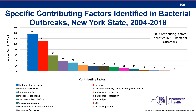Looking at specific contributing factors in bacterial outbreaks from 2004 to 2018, there are several different factors because bacterial outbreaks are often associated with a number of different food items, processes, and handling methods. A majority were associated with contaminated ingredients. A number involved inadequate cooking, cooling issues, cross-contamination, preparation several hours before service, and improper holding — allowing bacterial pathogens to proliferate.